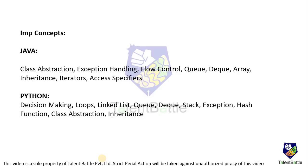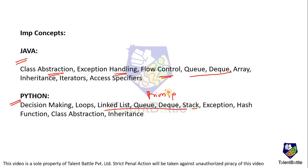Related to Java and Python, these are the important concepts based on previously asked questions. The class abstraction concept, exception handling, flow control mechanism - this is very important and common in both cases. Then data structures like Queue, Deque, Array, inheritance, access specifiers, and iterators - this is related to Java. Similar concepts for Python include decision making, looping statements, and data structures like linked list, Queue, Deque, and priority Queue, which has also been frequently focused on. Exception handling, hash function, class abstraction, and inheritance are key. If you prepare these concepts properly, you will be able to clear the certification round, and we will take thorough practice in our masterclass.